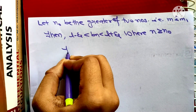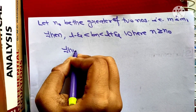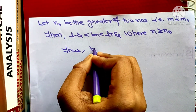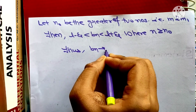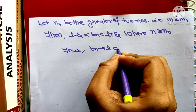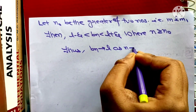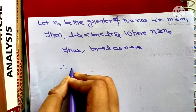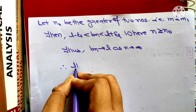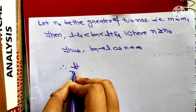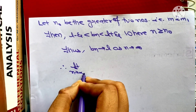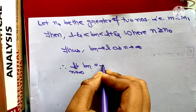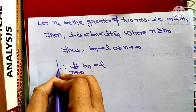Thus bₙ tends to l as n tends to infinity. Therefore, the limit as n tends to infinity of bₙ equals l, which completes the proof of the theorem.